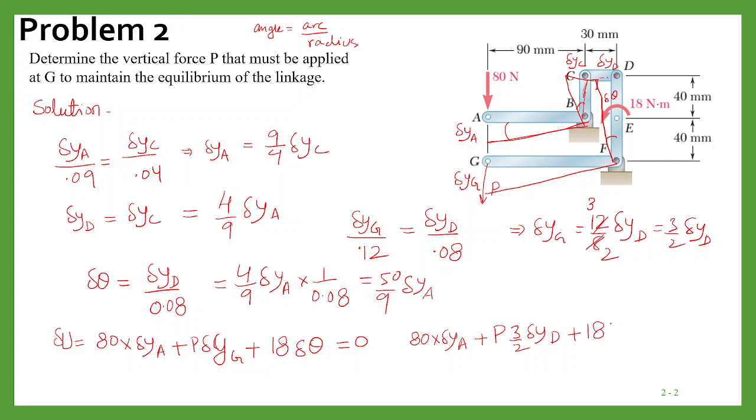And in place of delta theta, we can write 50 by 9 delta y_a, it should be equal to 0.